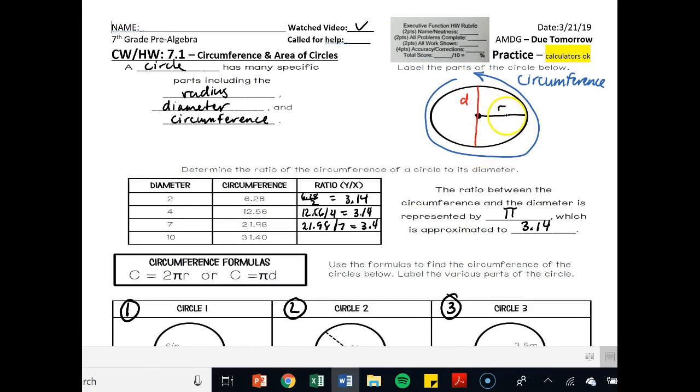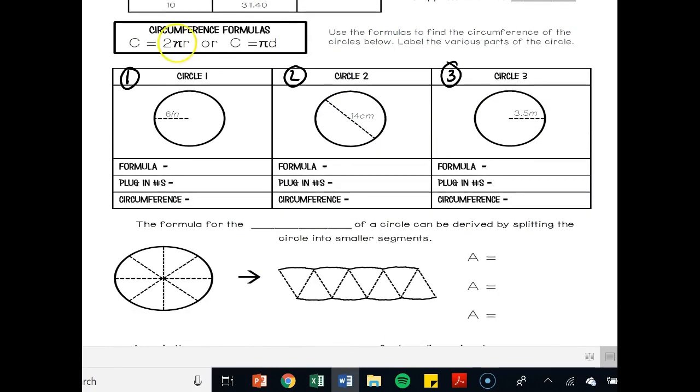If I have a radius, let's multiply it by 2, and then I'll get a diameter. So if I have a radius, then it's just 2 pi r, or if I have a diameter, it's just pi d.